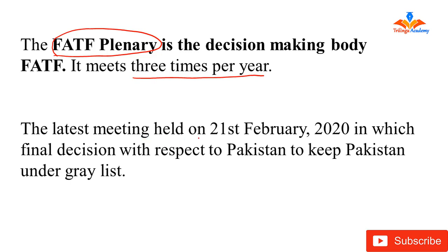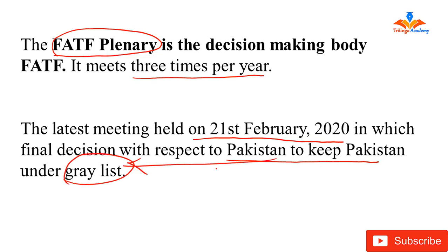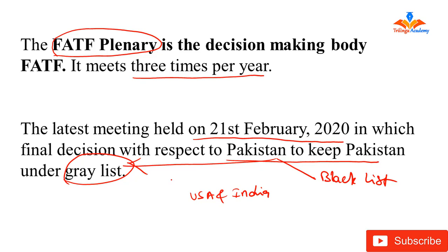Recently, the last meeting was held on 21st February 2020, in which the FATF plenary decided to keep Pakistan under the grey list, which means Pakistan is involved in money laundering and terrorist financing. Countries like the USA and India would like to keep Pakistan under the black list. That is all about FATF — its objectives and how it helps control money laundering and terrorist financing across the globe. Thank you.